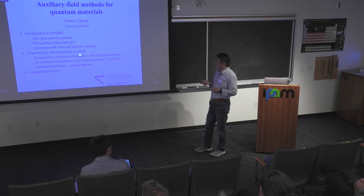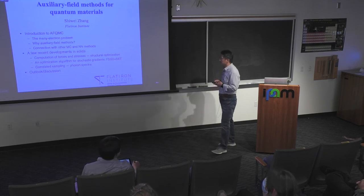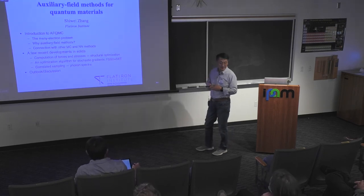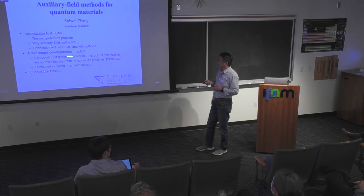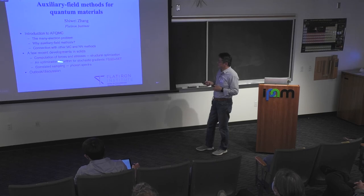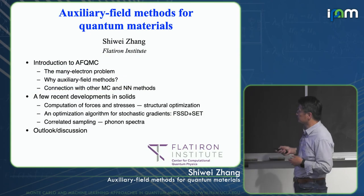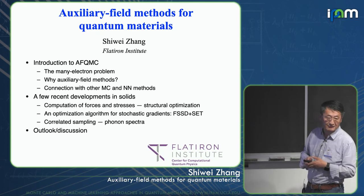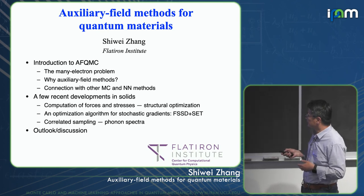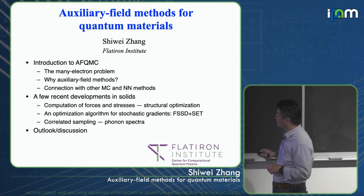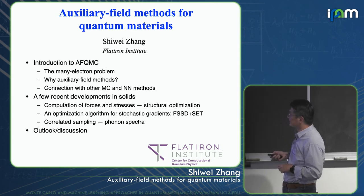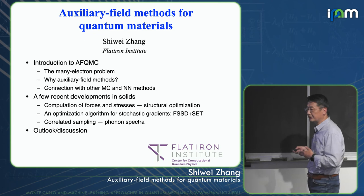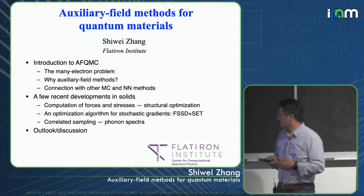In terms of recent developments, I'm going to talk about solids — mostly solids — computation of forces and stress for structural optimization with quantum Monte Carlo. And because of this ability to compute forces and stresses, how do you use them to optimize for structure, since forces and stresses have stochastic noise. And then if there's time, I'll talk a little bit about correlated sampling for computing phonon spectra.